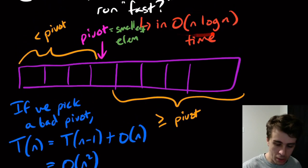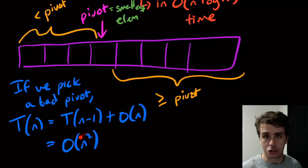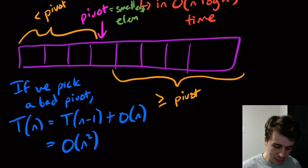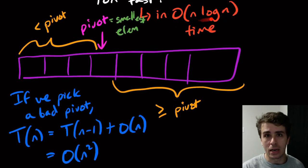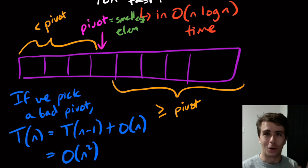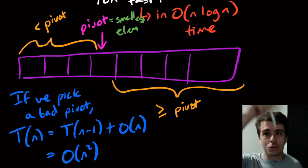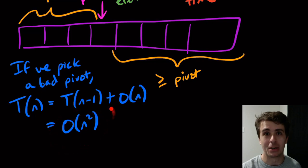I want QuickSort to run in O(n log n) time, which is much better than O(n²). We already have a sort that achieves O(n log n) — merge sort. I want to see if we can get QuickSort to match that. Put in the comments: why is it called QuickSort if the naive implementation runs in O(n²)?